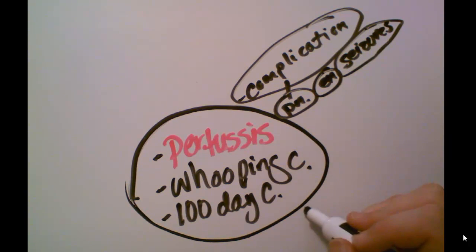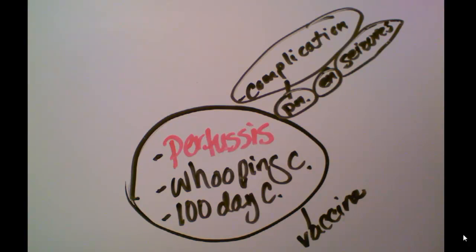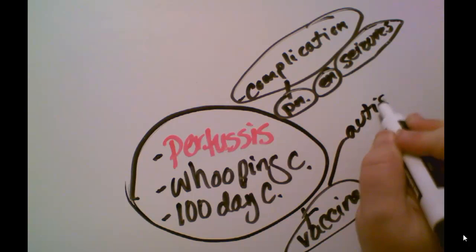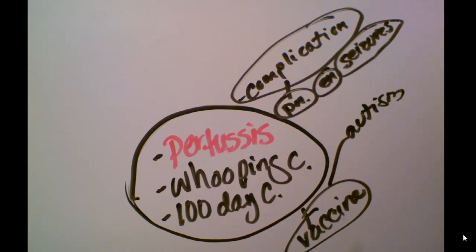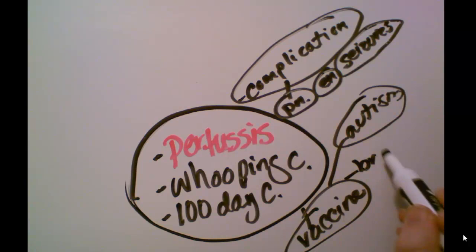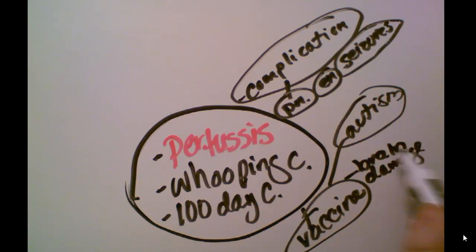I also might want to talk about how it can be prevented. There is a vaccine for whooping cough that most of you probably had. Now there's a lot of controversy over vaccines — one, because of autism, there's some concern that vaccinations will cause autism; and two, there is a worry that the pertussis vaccination in particular causes brain damage in a small population of those who get vaccinated. So I'd want to talk about brain damage as well.